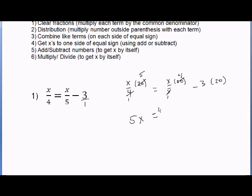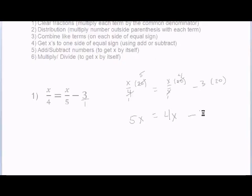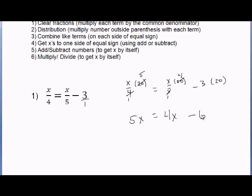We have an equal sign. x times 4 gives us 4x. Then negative 3 times 20 is negative 60. So we just cleared the fractions.